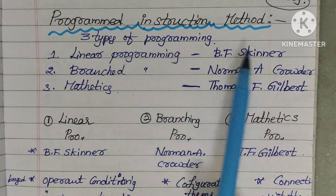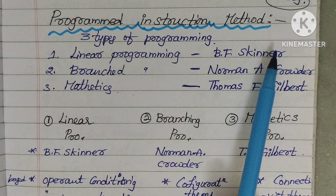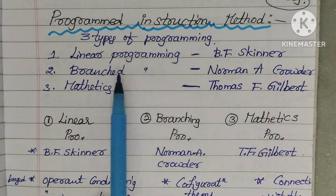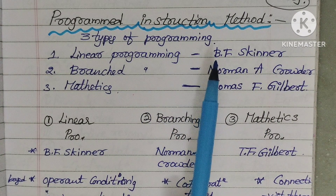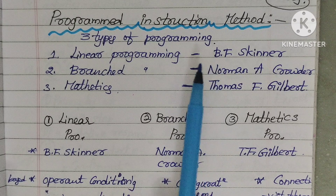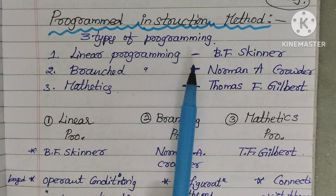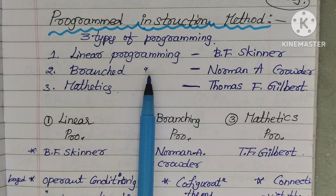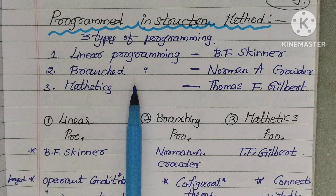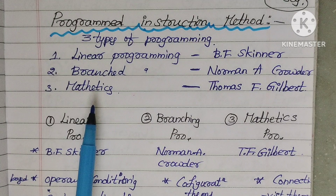Programmed instruction method. Programmed instruction method has three types of programming: linear programming, branched programming, and mathetics.